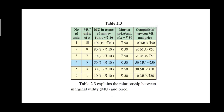Continuing the conversion: the third unit has 7 marginal utility, so 7 multiplied by rupees 10 equals rupees 70. The fourth unit has 5 marginal utility: 5 multiplied by rupees 10 equals rupees 50. The fifth gives 3 multiplied by 10 equals rupees 30, and the sixth gives 1 multiplied by rupees 10 equals rupees 10. This completes our third column of marginal utility in money terms.